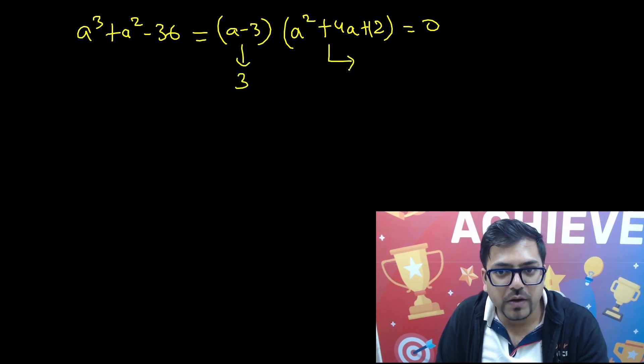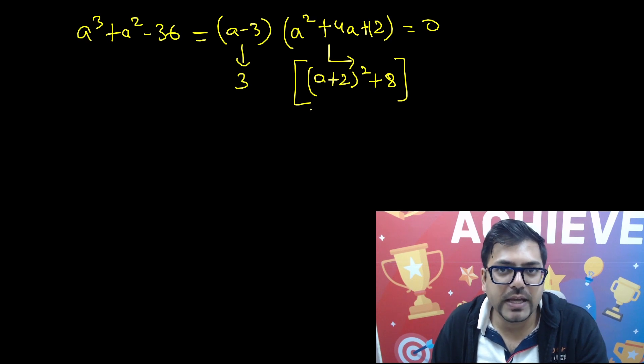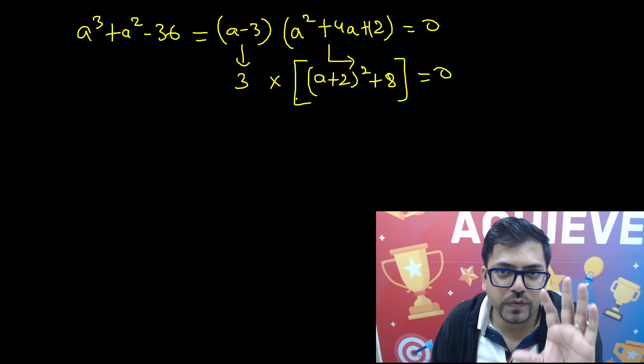You can find the determinant or you can do the completing the square method, whatever you want. So this can be written as (a + 2)² + 8. This bracket can be written like this. Now very easily I'm able to find that this can't be 0, this bracket won't be 0 at all for any real value of a.